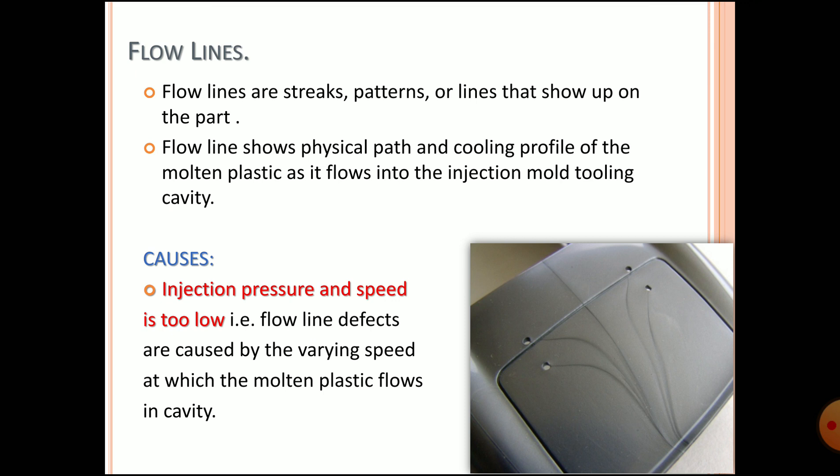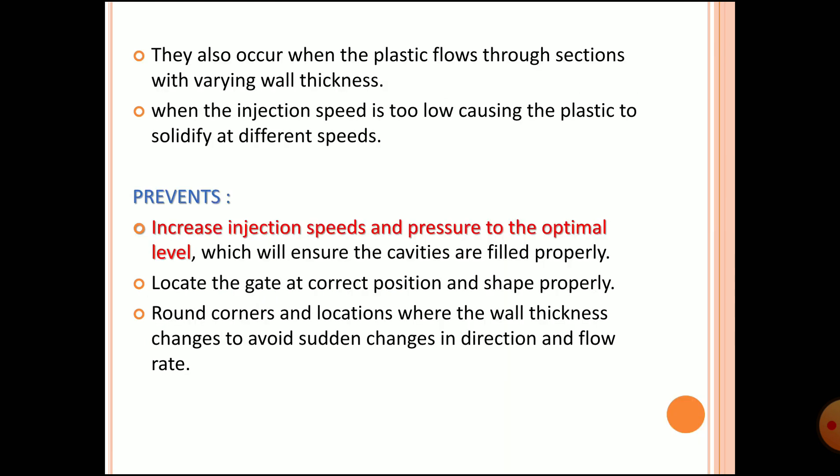Due to the injection pressure and speed being too low, this defect will be caused. Flow line defects are caused by varying speed at which the molten plastic flows into the cavity. This is the major factor due to which different types of defects are found in injection molding after solidification. They also occur when the plastic flows through sections with varying wall thickness.